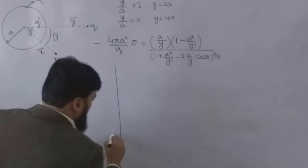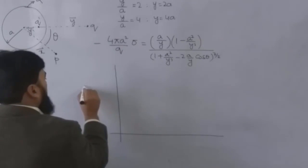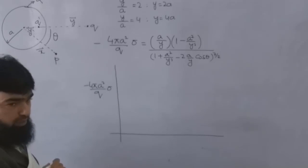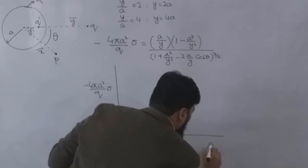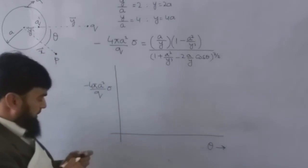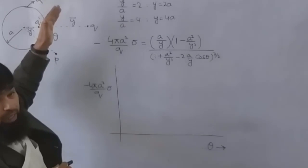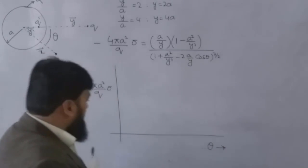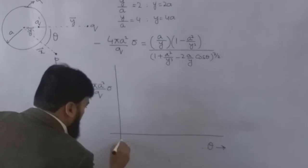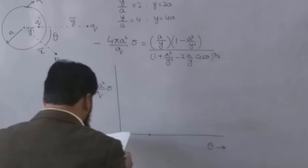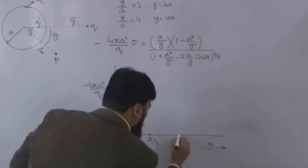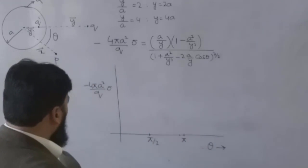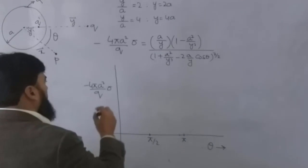Then this is equal, and let's say I dot the minus sign with this as well. It means minus here. So what will be this one, this side: a over y, and here will be (1 - a²/y²) divided by (1 + a²/y² - 2a/y cosθ)^(3/2). So what I did: dimensionless is, then other side should also be dimensionless. So if I plot this one on the y-axis, minus 4πa²/q times sigma on the y-axis, and I plot theta on this side.